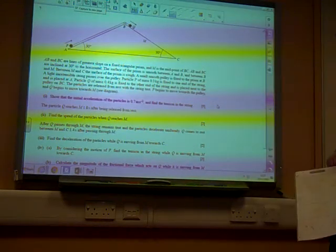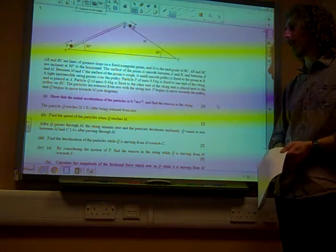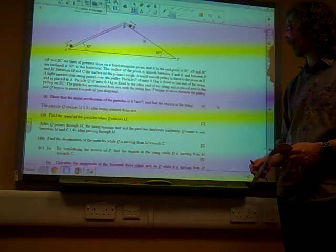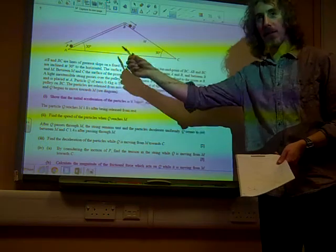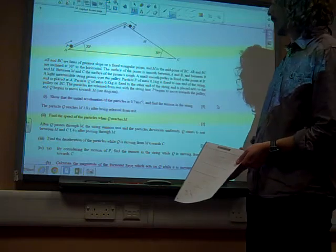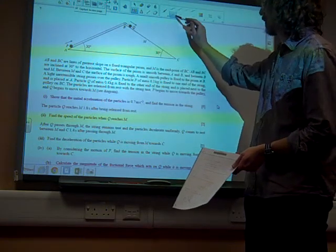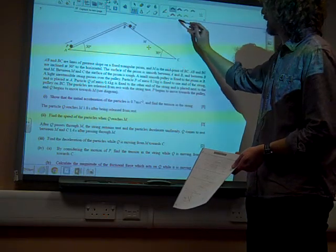Question 7. There's this crazy diagram. A, B and B aligns with a pretty slope and a fixed triangular prism. Oh, I don't want to read it all. You can see there are some angles there, there's a pulley. Most of it is smooth, but between M and C it's not. It's rough. Let's put some kind of rough thing. There we are.